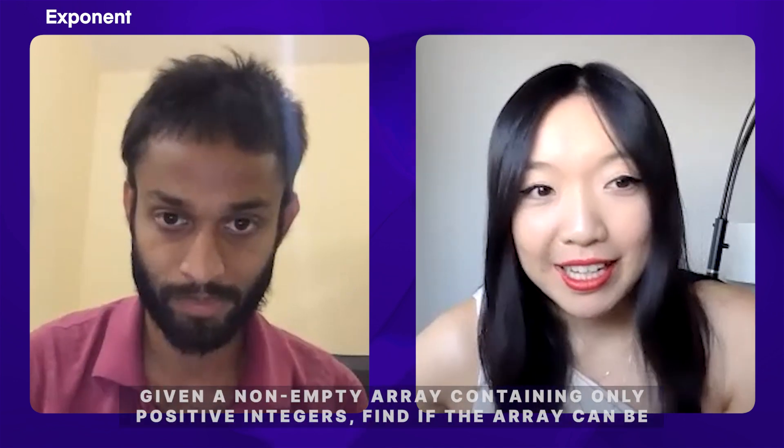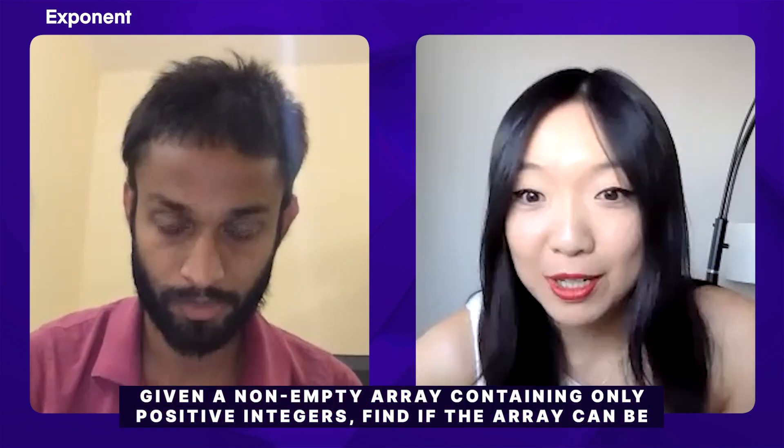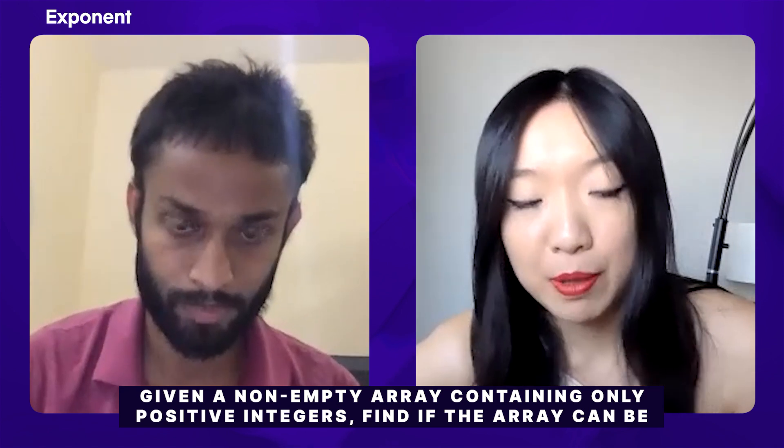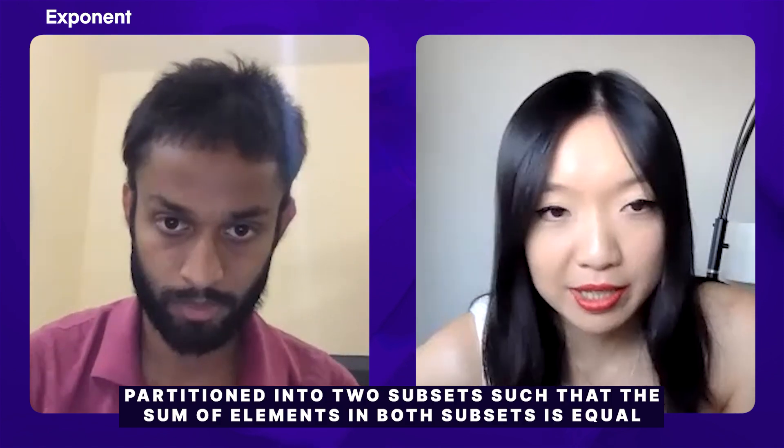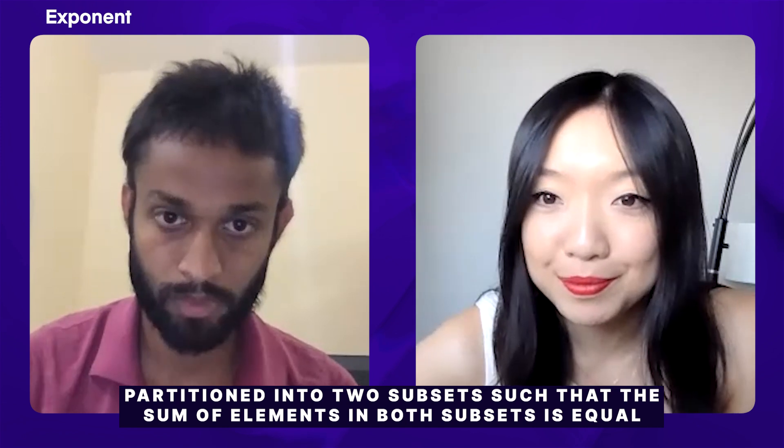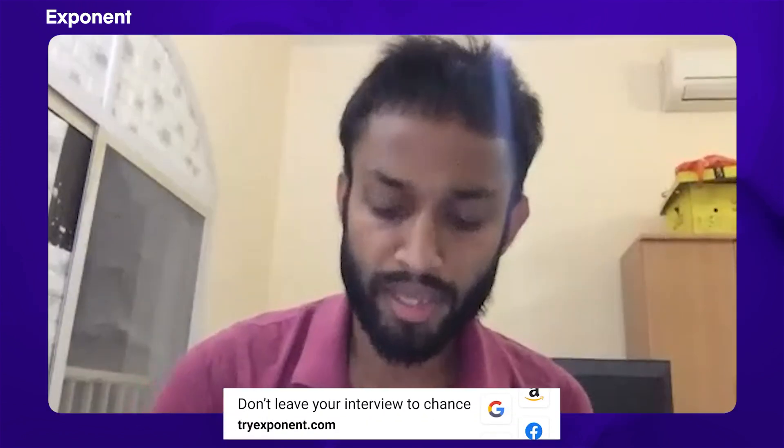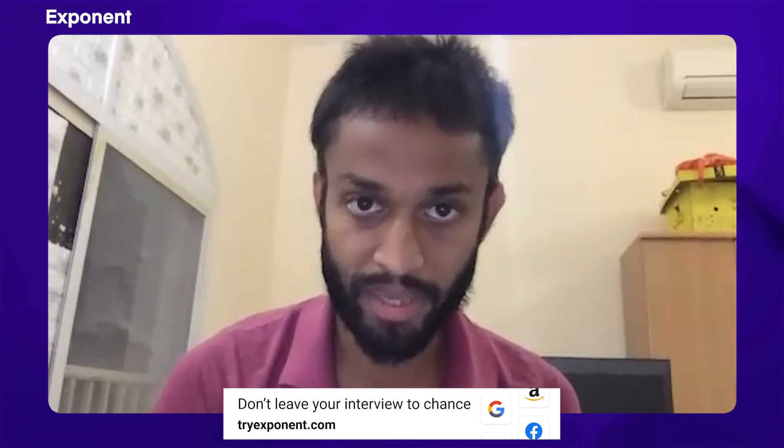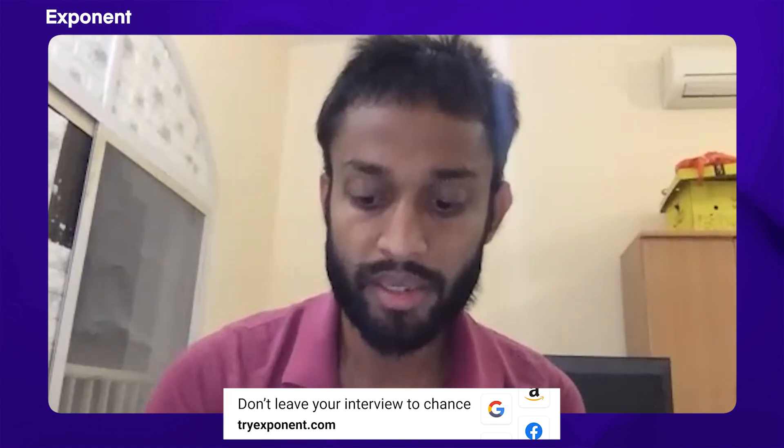So let's get right into the question. So our question for today is, given a non-empty array containing only positive integers, find if the array can be partitioned into two subsets such that the sum of elements in both subsets is equal. Sure, yeah. So I think by partition, you meant subset explicitly. So if I try clarifying it further, it's not about subarray. I could pick individual elements that form potentially a subset actually. So I could pick any elements from anywhere, and they form a subset actually. We are looking especially for subsets, not subarrays, right?